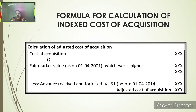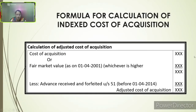Now let us see the formula for calculation of indexed cost of acquisition. First, we shall see the calculation of adjusted cost of acquisition. We have to consider the cost of acquisition or the fair market value as on 1st April 2001 — whichever is higher. For example, if the cost of acquisition is 4 lakh and the fair market value is 5 lakh, we consider the higher figure, i.e., 5 lakh. Any advance received and forfeited under Section 51 is to be deducted. After this deduction, we get the adjusted cost of acquisition.